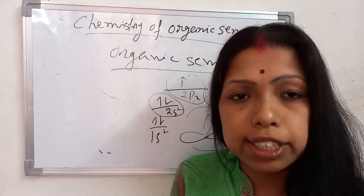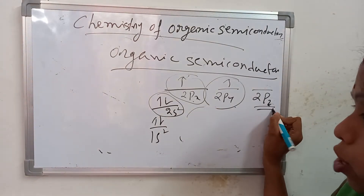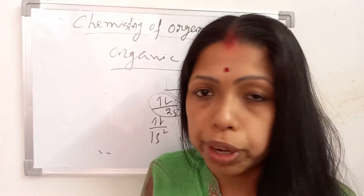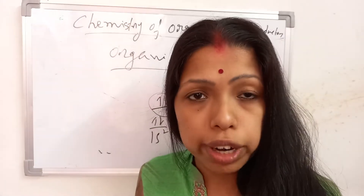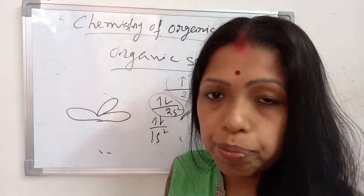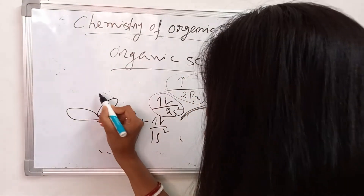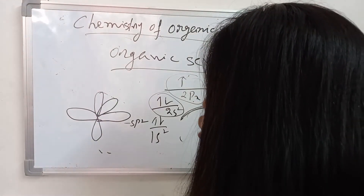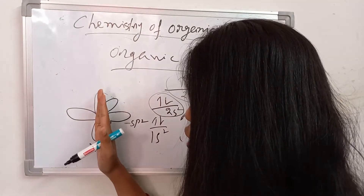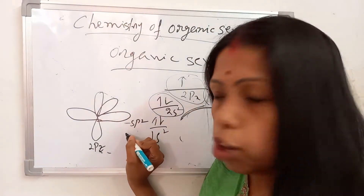The sp2 orbital lies in a plane at 0 degrees. Now the 2px orbital is the unhybridized orbital — it remains unoccupied and unhybridized because the other three orbitals (2s², 2py, 2pz) already created the sp2 hybrid. The sp2 orbital has a triangular shape. The 2px unhybridized orbital creates a 90-degree angle with the plane of the sp2 orbital.